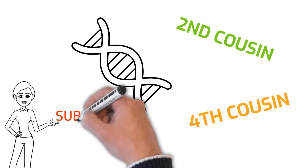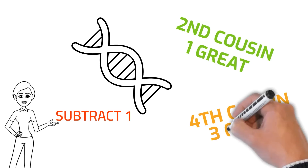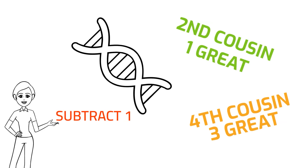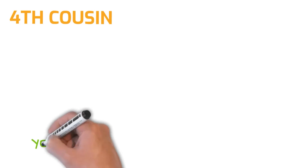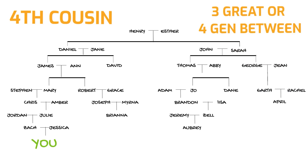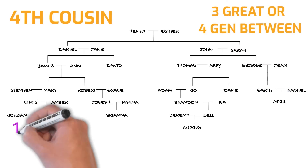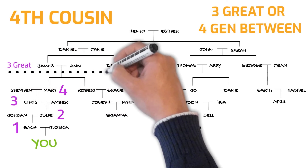So how does all this help us with those DNA cousins? Subtract one — this tells you at what great-grandparent level you're likely to share a common ancestor. Let's do one example of a fourth cousin DNA match. Using our two methods, we subtract one to get three greats, or four generations between. You likely share an ancestor at this level of your family tree.